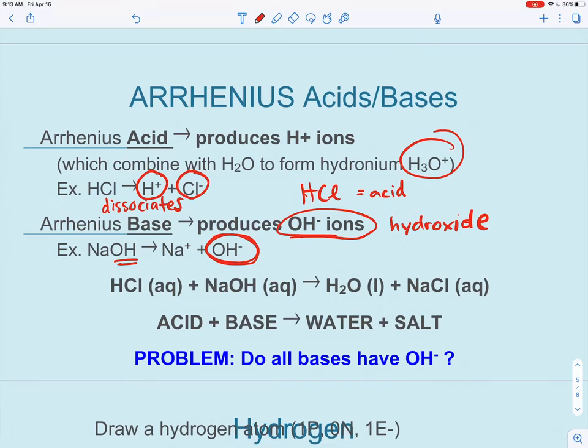Continuing with this idea, when you combine an Arrhenius acid and an Arrhenius base together, it's basically a double displacement reaction. So the hydrogen will switch with the sodium. And we end up with two products always. We're going to get water, H2O, and some kind of salt. It's not always going to be NaCl, but some kind of ionic compound will come from the reaction of these. And we'll practice this more tomorrow.